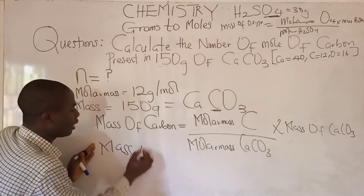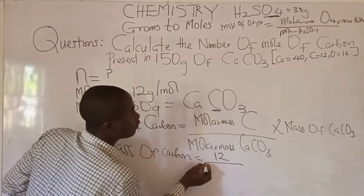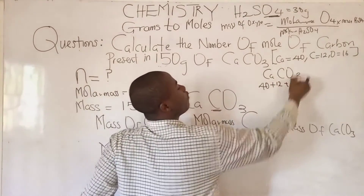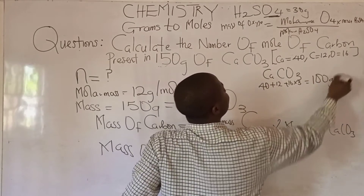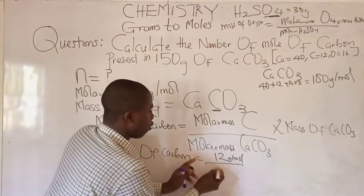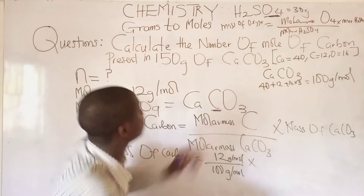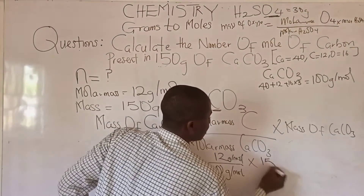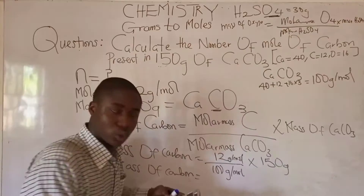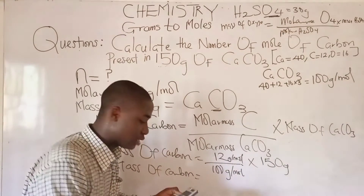Now we calculate the mass of carbon. The molar mass of carbon is 12 grams per mole. The molar mass of CaCO₃ is: calcium (40) + carbon (12) + oxygen (16 × 3) = 100 grams per mole. So mass of carbon = (12 / 100) × 150 grams = 12 over 100 times 150 = 18 grams. So the full compound contains 18 grams of carbon.